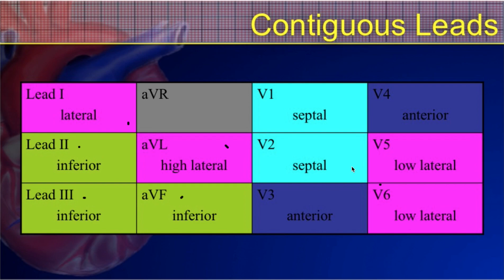V1 and V2 are both considered your septal leads. They're looking at the interventricular septum — the area of the heart between the right and the left ventricles. And then V3 and V4 are both looking at the anterior wall of that left ventricle. AVR doesn't truly have any contiguous leads; however, it will have a very similar angle of view to V1, so you'll often see a similar shaped QRS complex in AVR, but we don't truly consider it contiguous to anything.